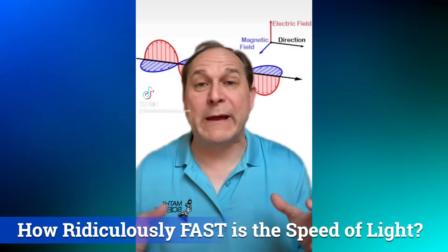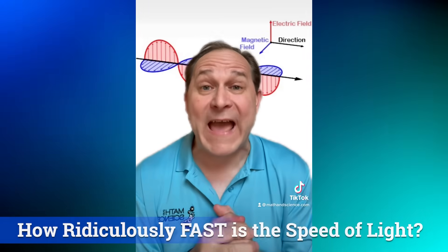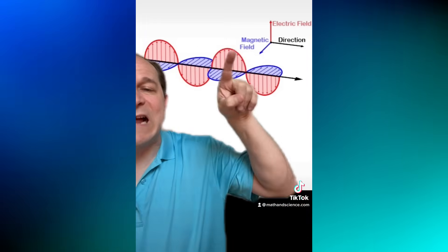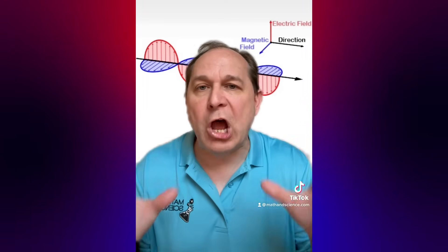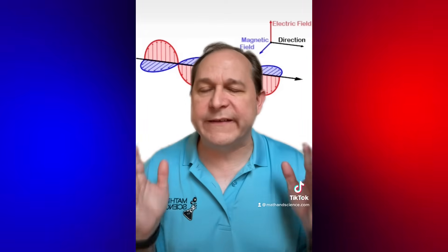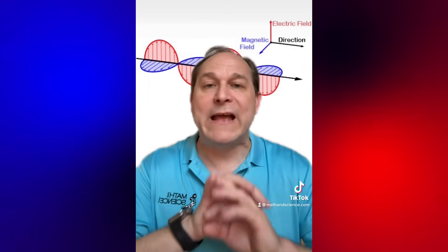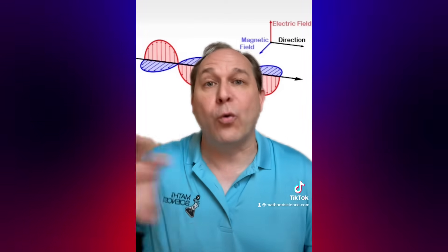I'd like to talk about just how ridiculously fast the speed of light really is. Light itself is an oscillating magnetic field and an oscillating electric field propagating through space with no medium. It comes in chunks or packets of energy called photons, and the speed of light is always the same number no matter how fast you are moving or how fast the source of the light is moving. In numbers, the speed of light is about 186,000 miles per second.